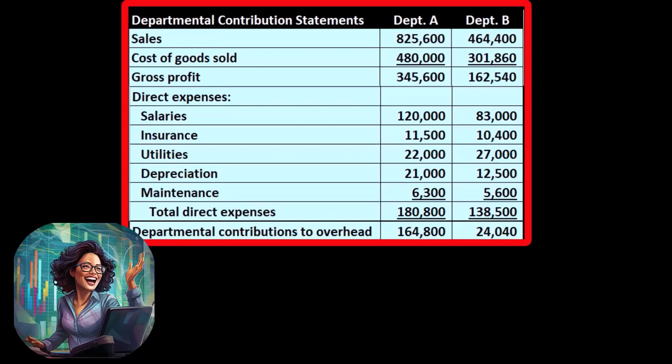The allocated expenses we look at here are often expenses we would have whether or not we eliminate a particular department. There's a question as to whether they would still be there if we were to eliminate a department. However, we do want to allocate these costs to the department for other types of analysis.